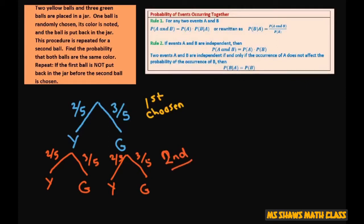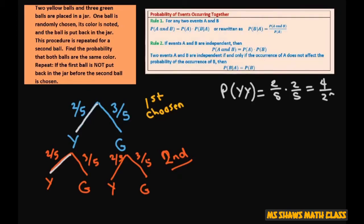Now let's label the outcomes. The probability of yellow-yellow — going yellow for the first and yellow for the second — is two-fifths times two-fifths, which equals 4 over 25. Then for yellow-green, the probability of yellow-green is two-fifths times three-fifths, which gives you 6 over 25.